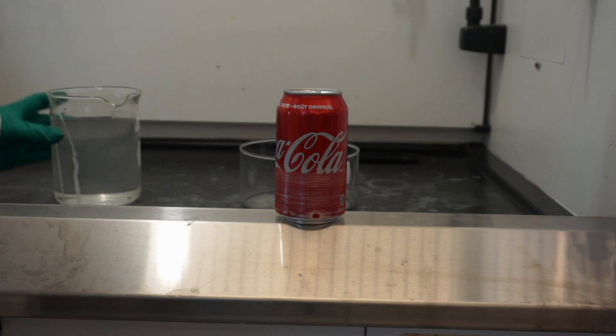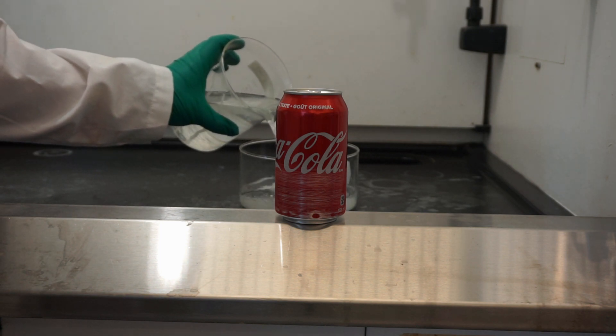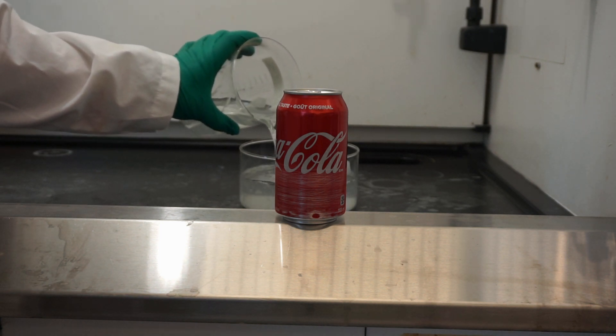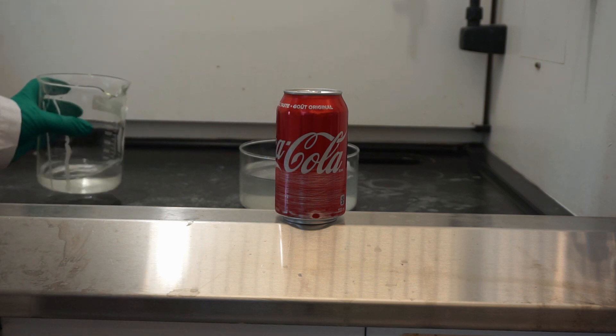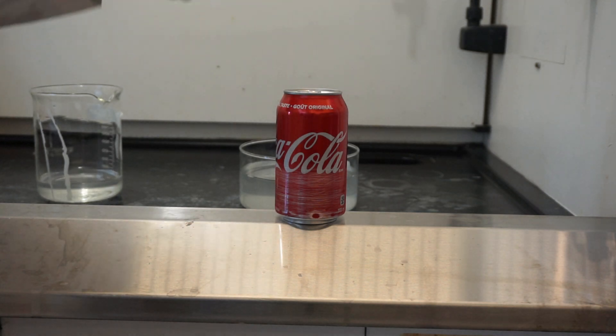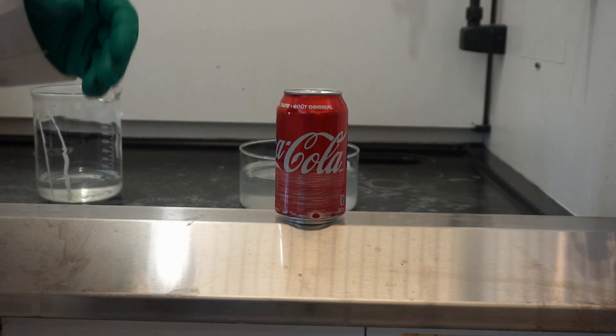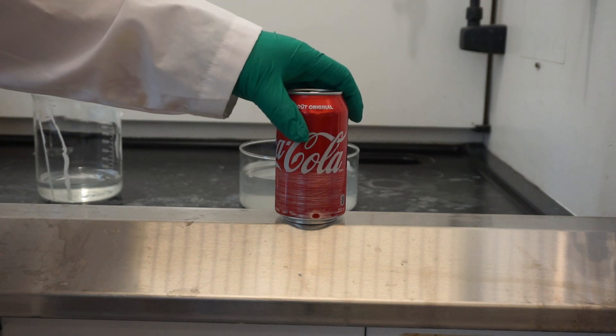Now that oxide layer is actually only stable under normal ambient conditions. If we put the aluminum into a fairly basic solution, which is what we have here, we will prevent that oxide from forming and see the reaction of, in this case, water with aluminum.